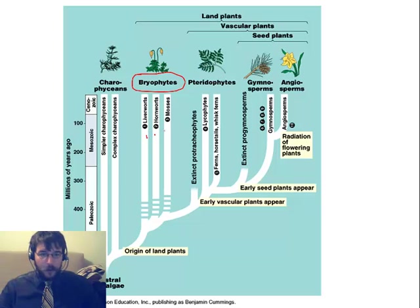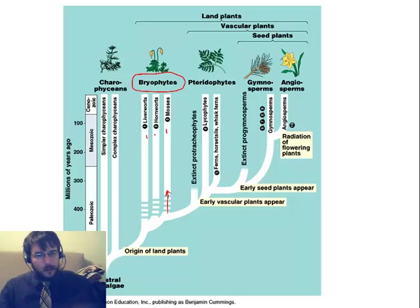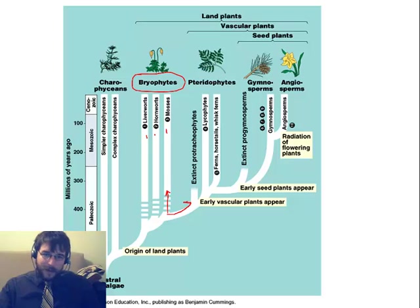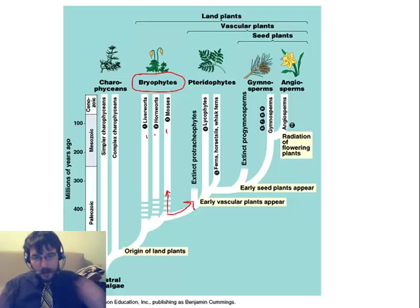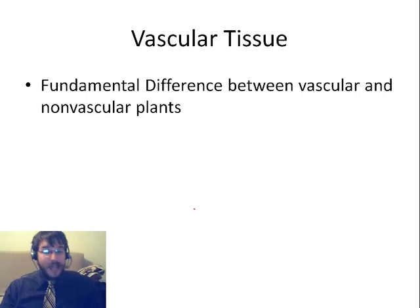You'll notice we've got our liverworts, our hornworts, and our mosses. Remember we talked about mosses having those primitive conductive tissues and the sporophyte getting a little bit larger than the gametophyte. This group of very primitive vascular plants branched off from there, and you can actually see a lot of similarities between them.